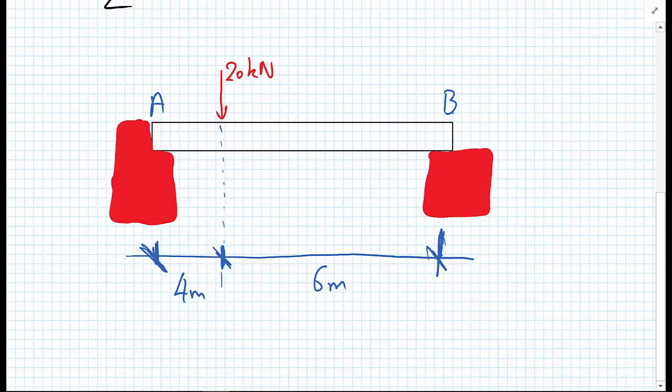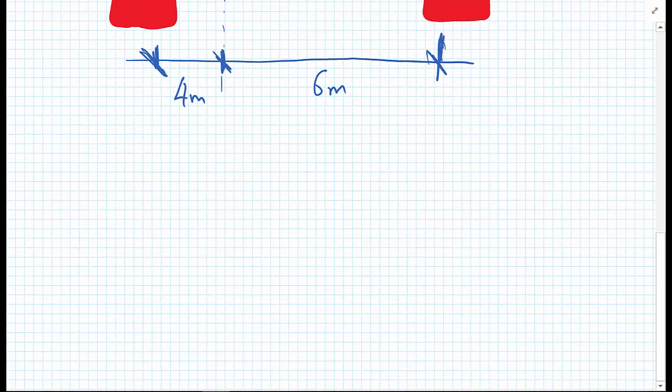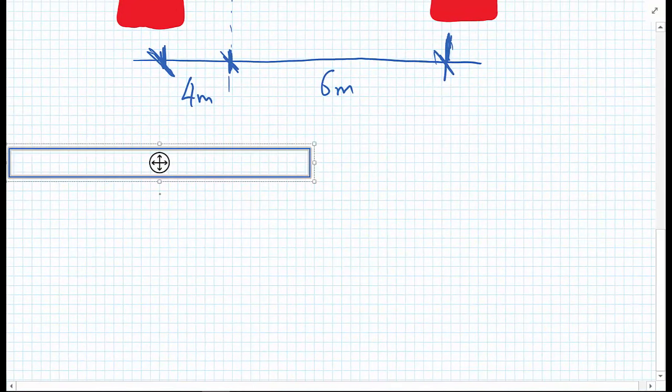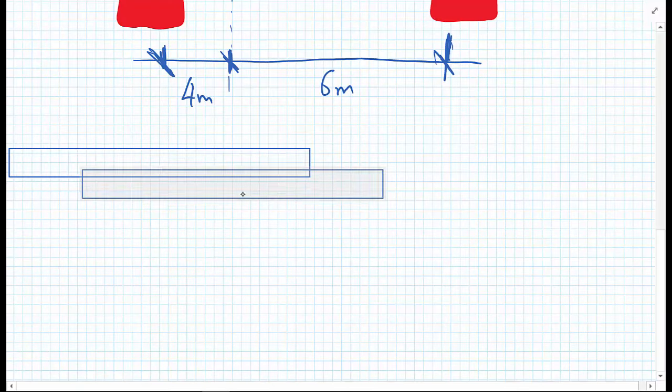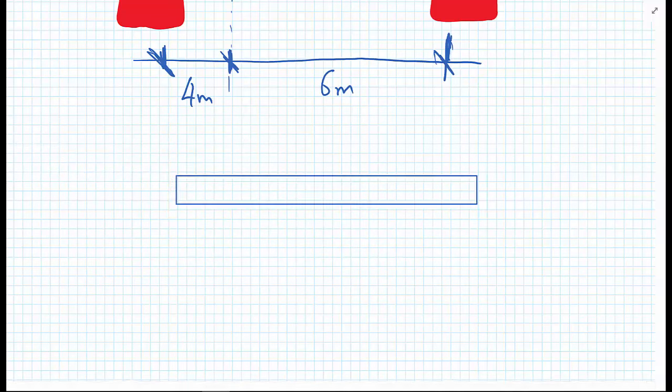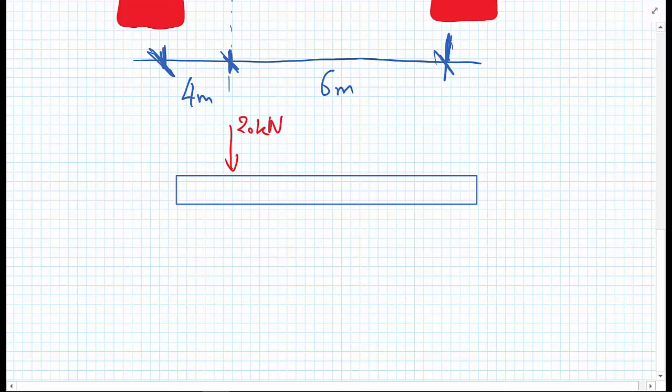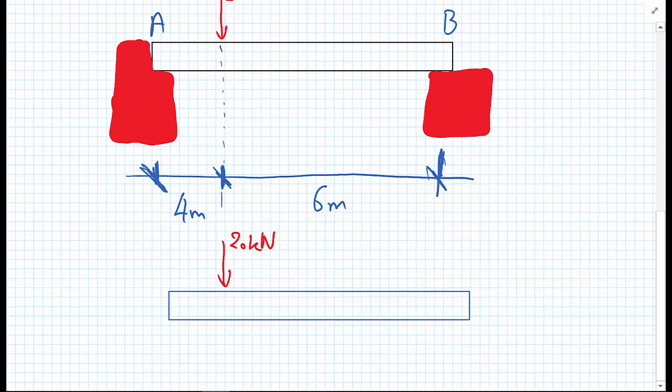So the first thing that we need to do with this problem is actually draw a free-body diagram. What do the effects of this wall actually have on the free-body diagram of the beam? So the easiest thing we can do is we can redraw the beam. And we have to re-put on the force, the external force that we've applied of 20 kilonewtons.